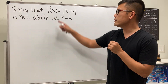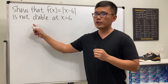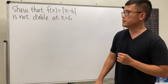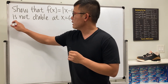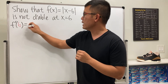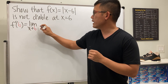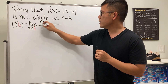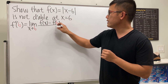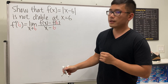Here we're going to show that the function absolute value of x minus 6 is not differentiable at x equals 6, and we'll be using the definition of the derivative to do this. So let's see if we have f prime of 6. By definition, this is the limit as x approaches 6 of f of x minus f of 6, divided by x minus 6.